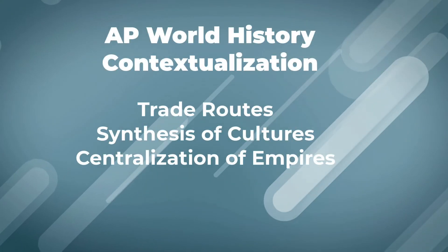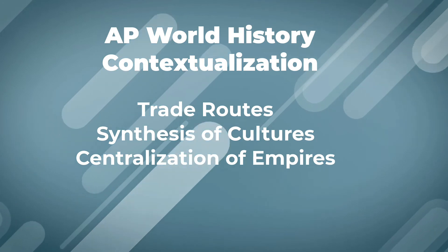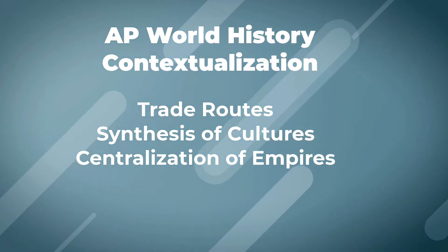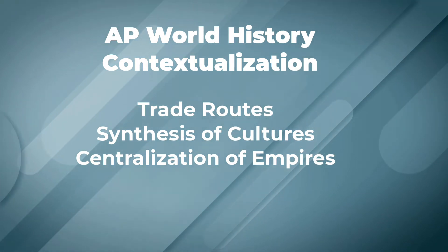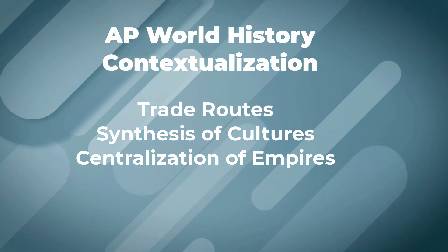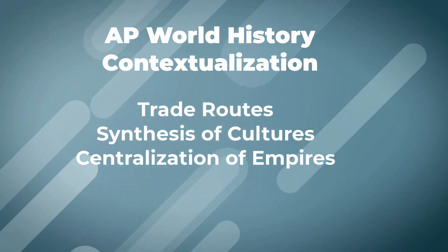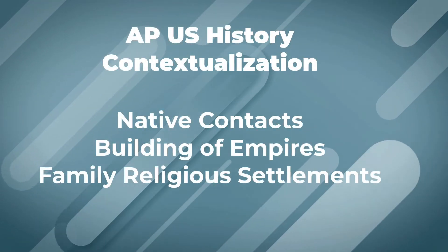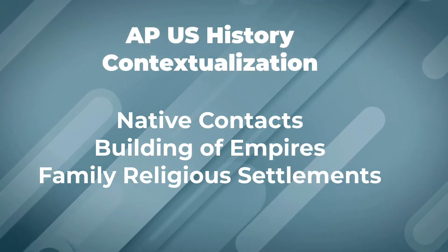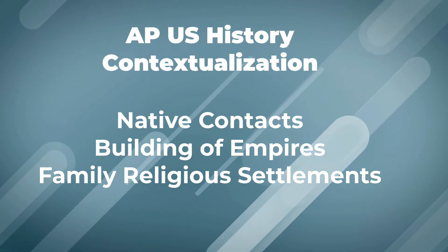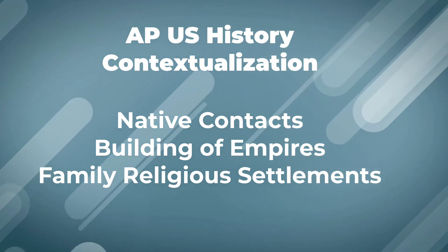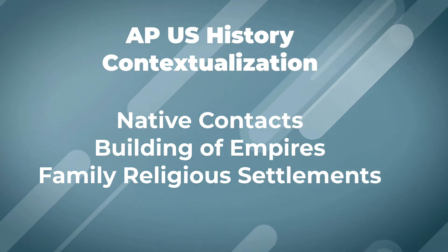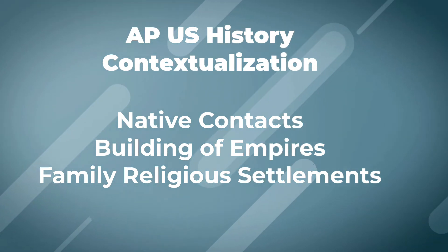For AP World History, an example might look something like this: for empires in the first unit, the overall context would be about trade routes, the synthesis of cultures, and the centralization of empires. For US History, at the very beginning of what we've been studying, we could talk about native contacts with Europeans, the building of new empires, and family and religious settlements. Notice how broad they are, but we're still keeping it concrete.